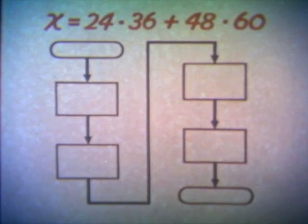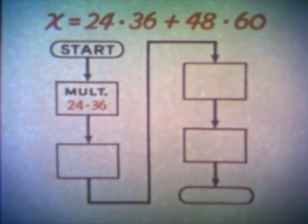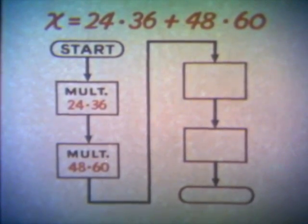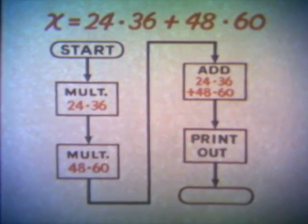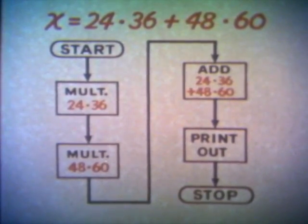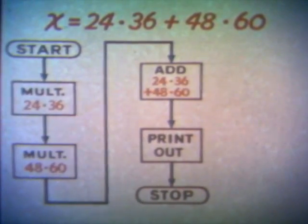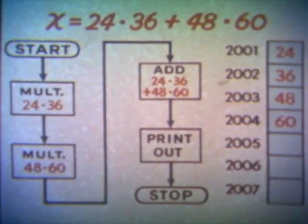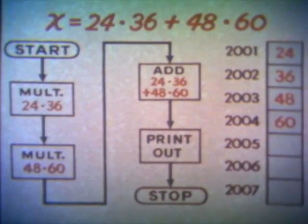We will follow the process for one set of data: 24, 36, 48, 60. The flow chart for this problem is a simple one. The key operations are start, multiply the first two numbers 24 and 36, multiply the third and fourth numbers 48 and 60, add the two products, print out the answer, and stop. You begin coding by deciding where you will store the data — let's say in these addresses in the computer storage unit. In addition, you will need to include data transfer operations, and to express these instructions in computer language, numerical words.